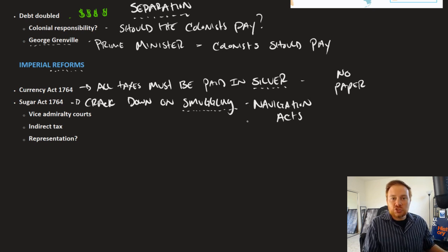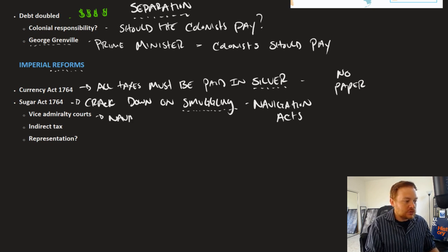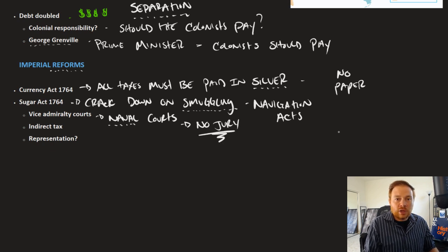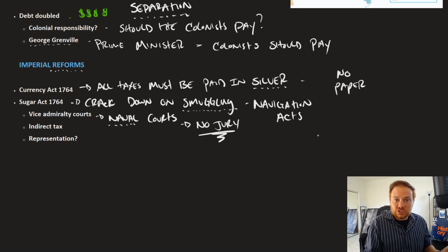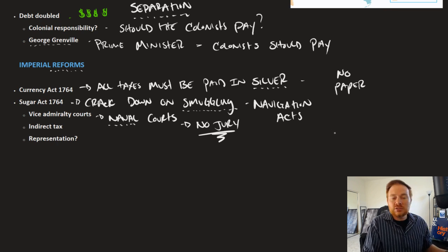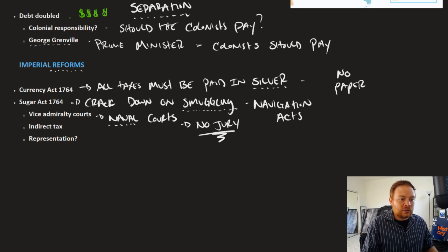One of the ways the Sugar Act was enforced was through vice admiralty courts — these were naval courts. If you were caught smuggling, you would be put before a naval court, and the key was that there was no jury. This really rubbed the colonists the wrong way, because they believed it was against their rights as Englishmen — that a right to a fair trial was something they deserved. In these vice admiralty courts, if you got caught smuggling, you were essentially going to be found guilty no matter what, and all these little things are building up resentment among the colonists.